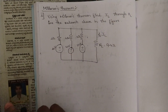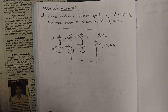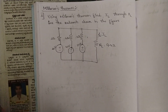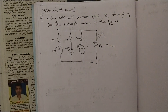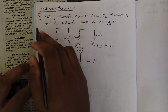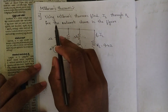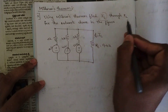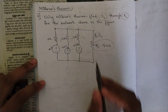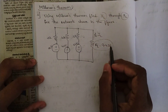If you haven't seen that, please watch that video. Also, if you haven't watched the previous videos covering superposition, Thevenin's, and Norton's theorems, you can watch those as well. Now let's solve two problems in this session. Starting with the first question: using Millman's theorem, find the current IL through the load resistance RL, which is 9.4 ohms, for the network shown in the figure.